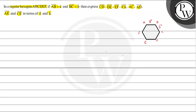The first thing we will be evaluating is CD vector. I will state the key concept that we are going to use in this problem. The key concept is basically the triangle law and parallelogram law — we will be using these two laws to solve our problem.